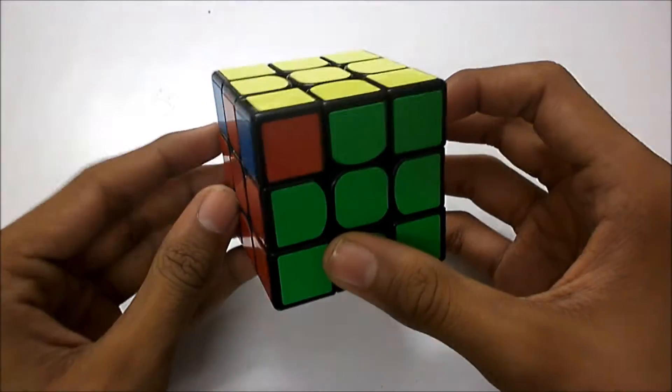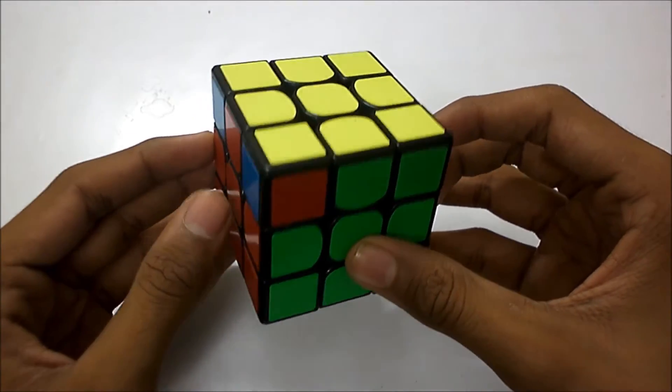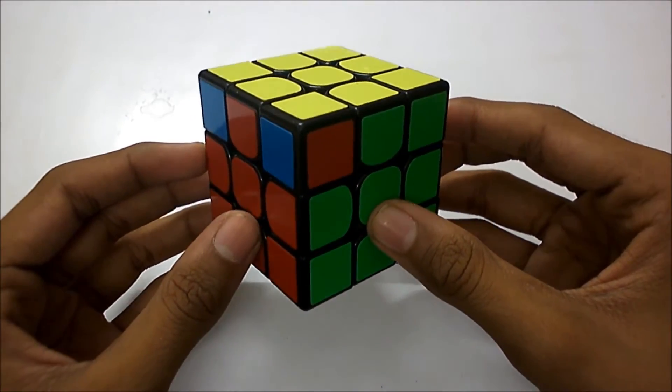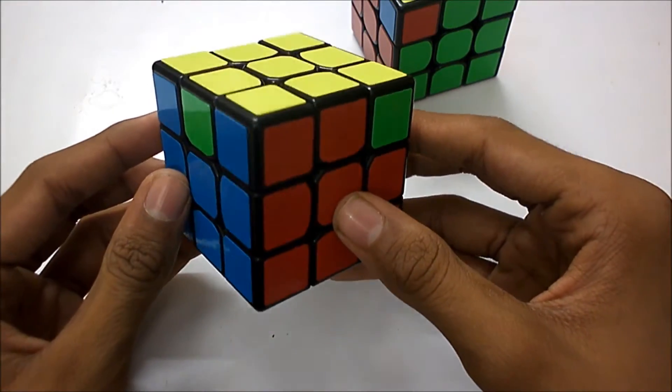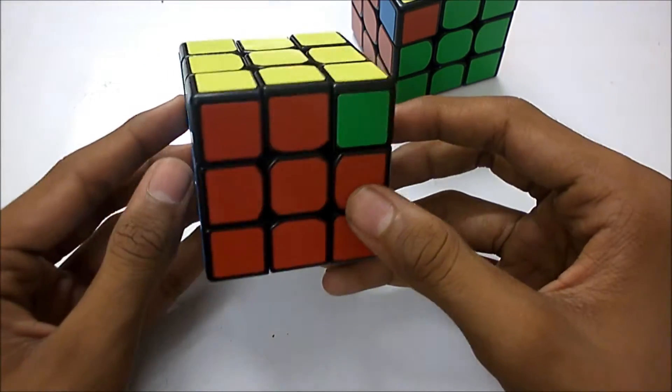What's super easy about this algorithm is that it's one PLL that you probably already know. This is just a T-perm but with wide R moves.